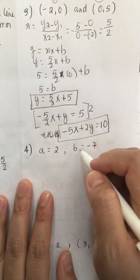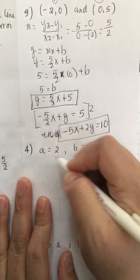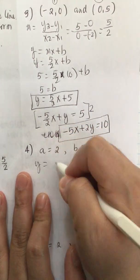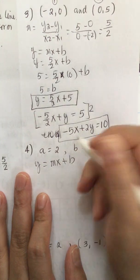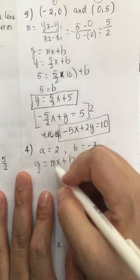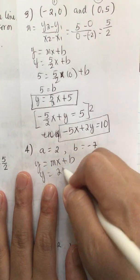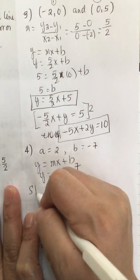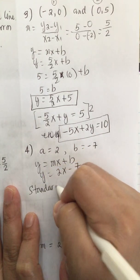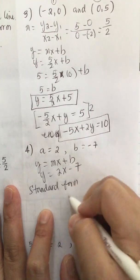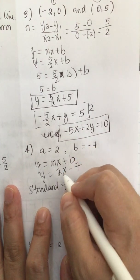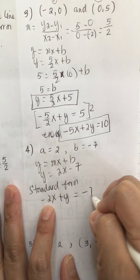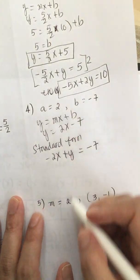Number 4: m equals 2 and b equals negative 7. They give us the slope and y-intercept, so we just write them in slope-intercept form: y is equal to 2x minus 7. In standard form, we move the 2x to the other side: minus 2x plus y equals negative 7.